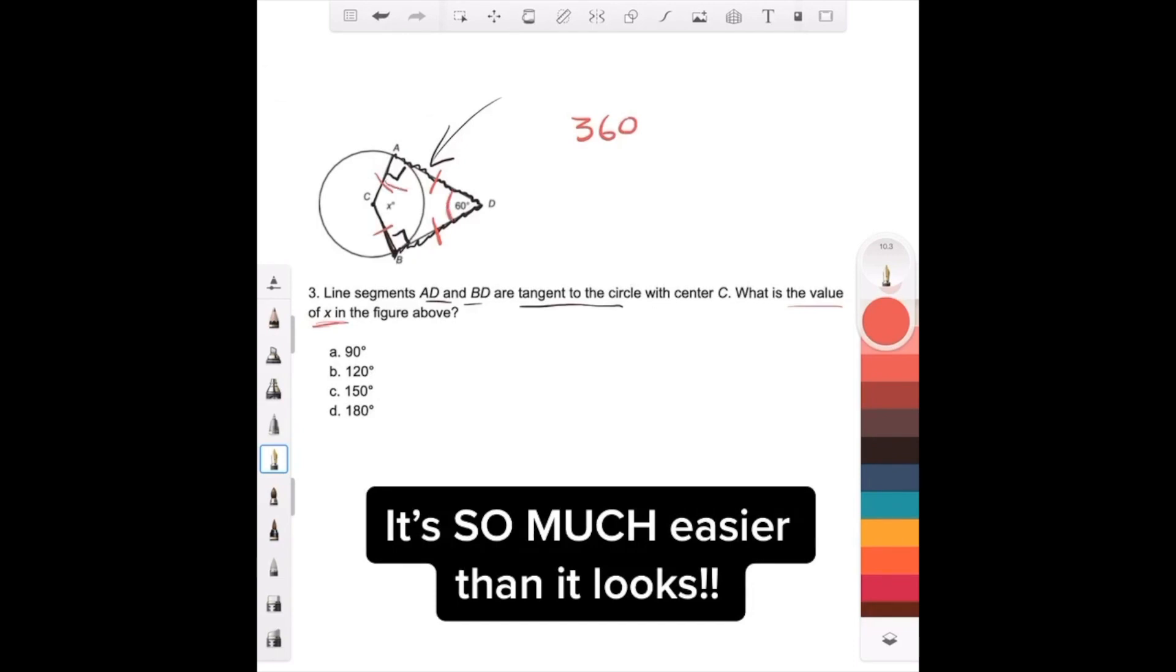60, 90, and 90, and then we'll have whatever's left over for x. So let's do that: minus 60, minus 90, minus 90, and that gives us 120. Answer choice B. Y'all are awesome, y'all are amazing, you get me so hype. Thank you for all the comments.